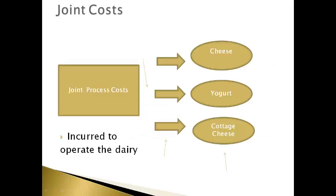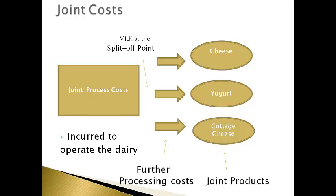An example is a dairy that produces raw milk. The costs incurred to operate the dairy are called joint process costs. The milk must be produced first in order to use it to produce other products. The point where the milk is available to sell raw is called the split-off point. The owners of the dairy must make the decision at the split-off point to either sell the milk raw or use the milk and incur further processing costs that will convert the milk into different products, which are called joint products.